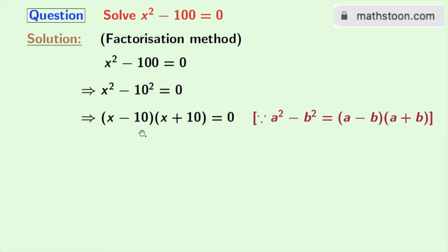Now keep in mind that if the product of two numbers is 0 then those numbers individually will also be 0. So here either x minus 10 is 0 or x plus 10 is 0. If x minus 10 is 0 then x will be 10, and if x plus 10 is 0 then x will be minus 10.